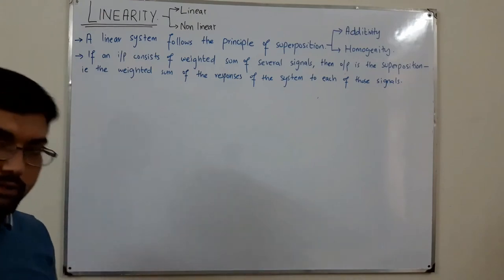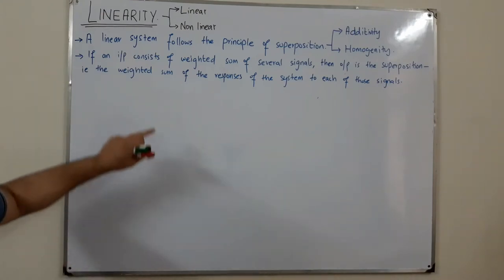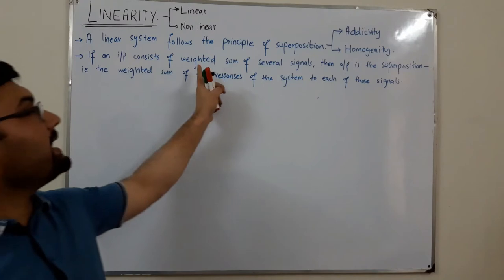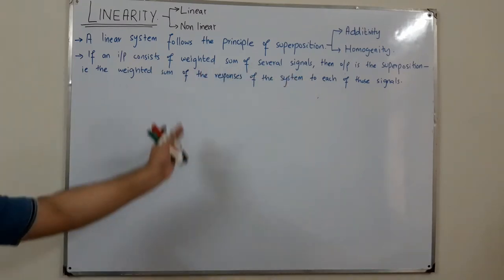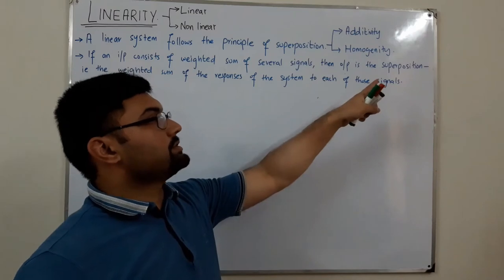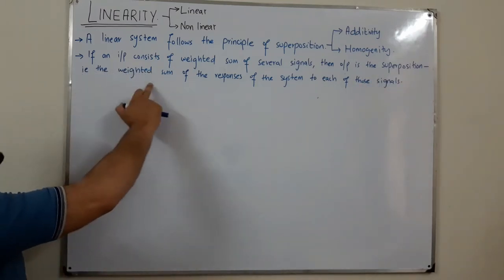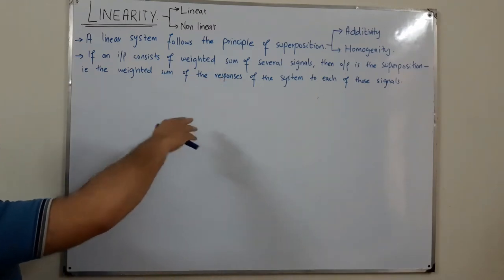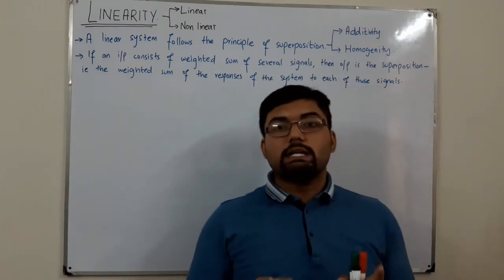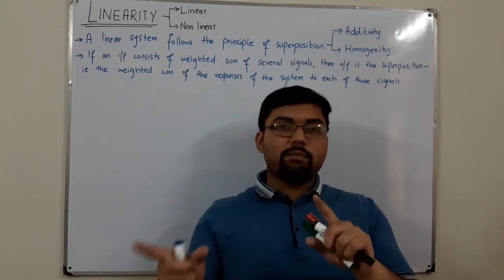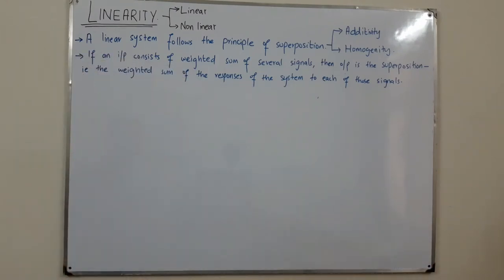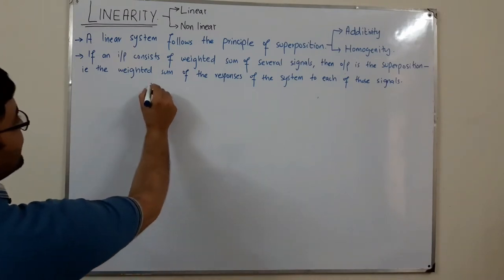The principle of superposition in words: if an input consists of a weighted sum of several signals — where weighted means multiplied by some coefficient — then the output is the superposition, meaning the output is the weighted sum of the responses of the system to each of those individual signals. Let me write this out. If you have an input x1(t), the output is y1(t).